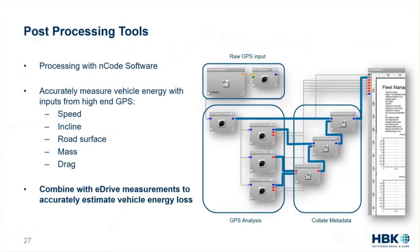I learned about this from friends at ENCODE, a software division of HBK that does really impressive work on vehicle measurement. The original usage was a little different, but it works extremely well for electric vehicles too. They can accurately take measurements of vehicle speed, incline, pitch, yaw, roll, road surface, mass, and drag — a lot of these coming from GPS — and also take very accurate electrical measurements and feed those into their software.